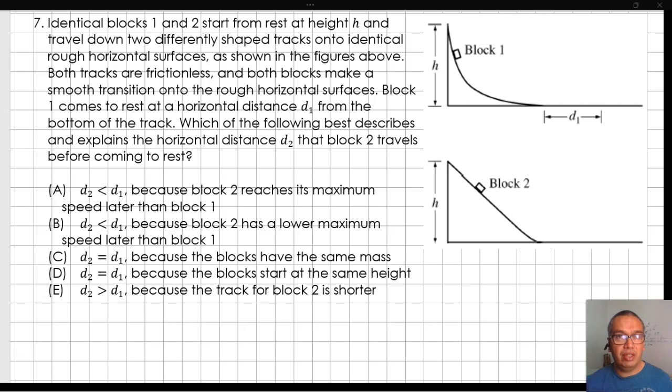Both tracks are frictionless, and both blocks make a smooth transition onto the rough horizontal surfaces. Block 1 comes to rest at a horizontal distance d1 from the bottom of the track.